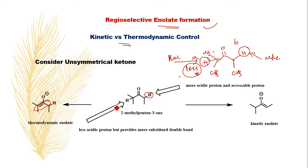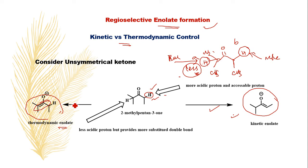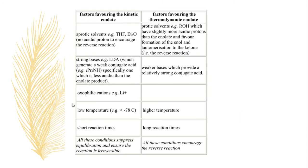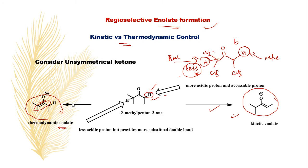If you abstract the more acidic proton, it always gives the kinetic enolate — that is, the less substituted enolate. The thermodynamic enolate comes from the more substituted position. However, the thermodynamic enolate is not always the more substituted one — it depends on steric hindrance. If there is more steric hindrance, it is impossible to form that thermodynamic enolate.